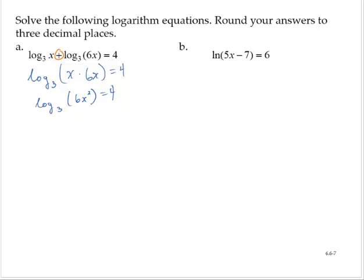Converting this to the exponential form, I would have 6x squared is equal to 3 to the fourth. 3 to the fourth is 81, so 6x squared is 81. Dividing by 6, x squared would equal 13.5.